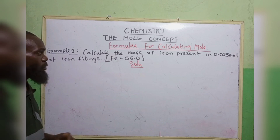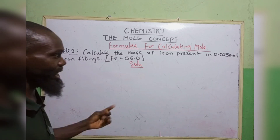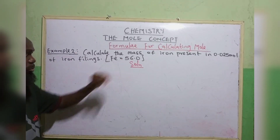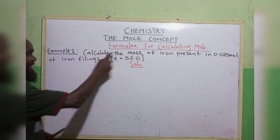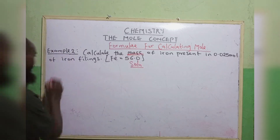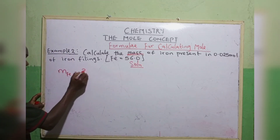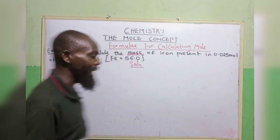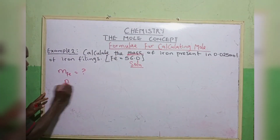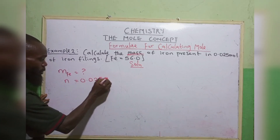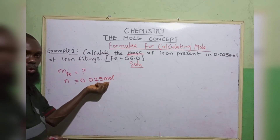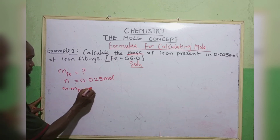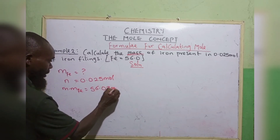Example 2: Calculate the mass of iron present in 0.025 moles of iron filings, given the molar mass of iron to be 56.0. We want to calculate the mass of iron, which is unknown. Present in 0.025 moles means n equals to 0.025 moles. The molar mass of iron equals to 56.0 grams per mole.